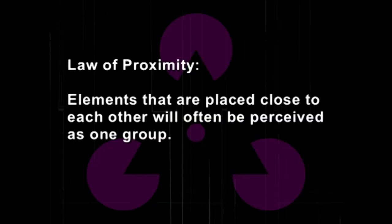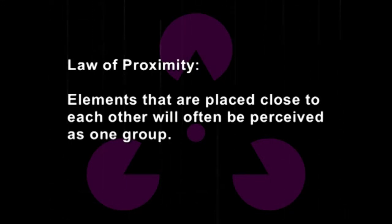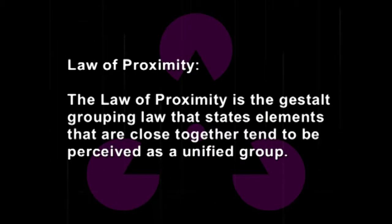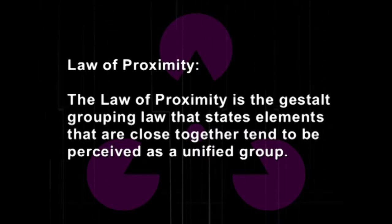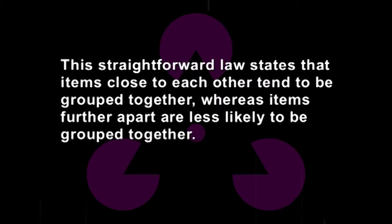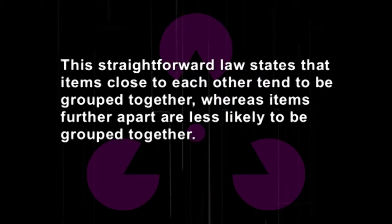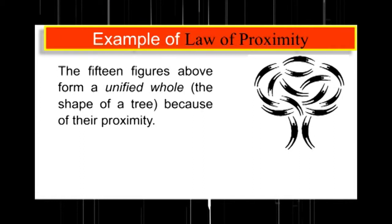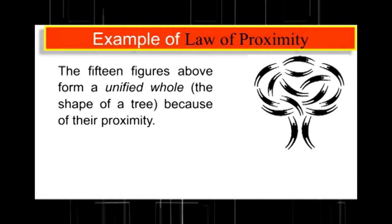The first is the law of proximity. In this law, elements that are placed close to each other will often be perceived as one group. The law of proximity is a Gestalt grouping law that states elements close together tend to be perceived as a unified group. Items close to each other tend to be grouped together, whereas items further apart are less likely to be grouped together. Please look at this image — the fifteen figures above form a unified whole because of their proximity.